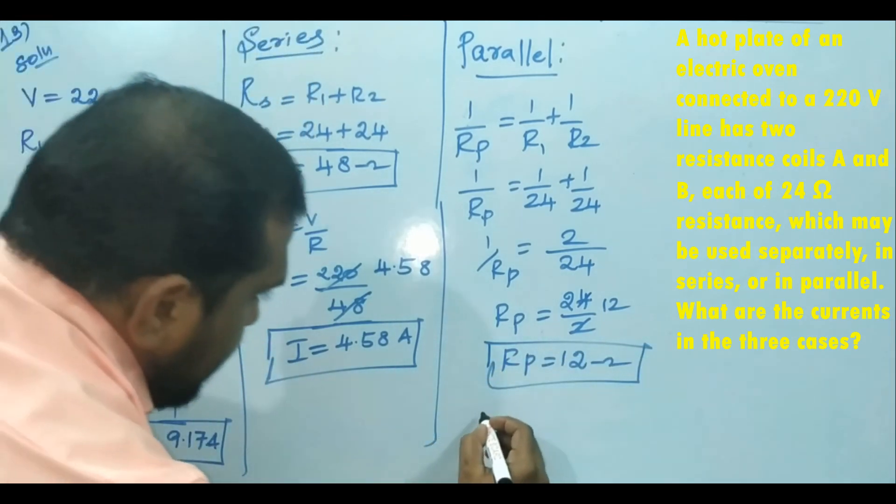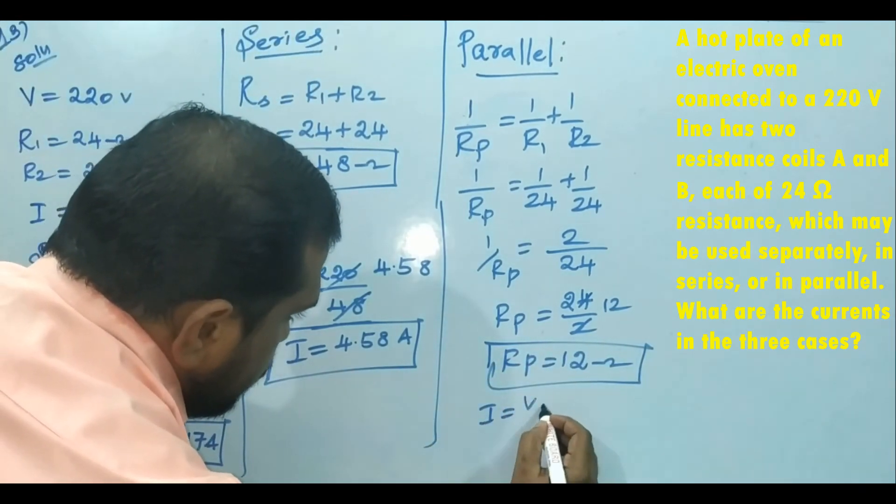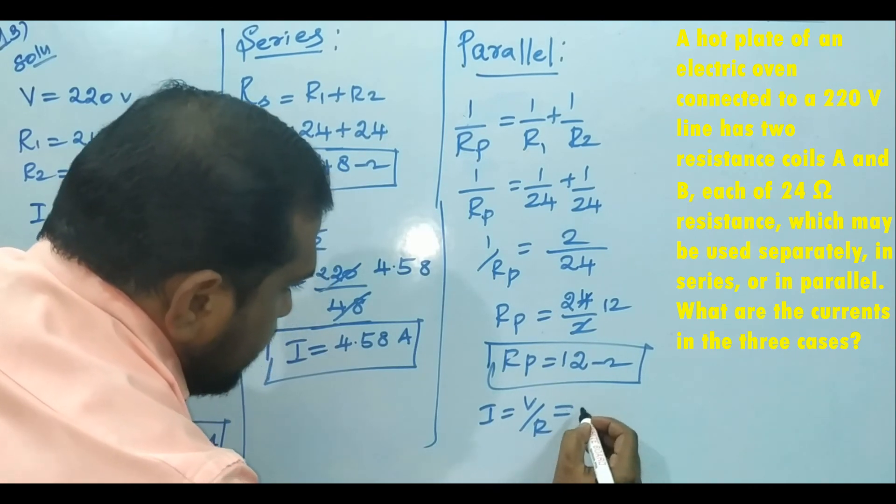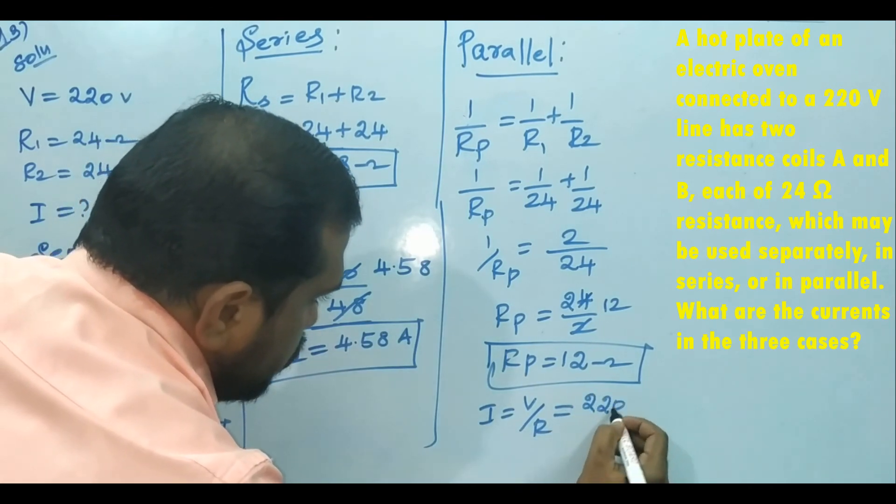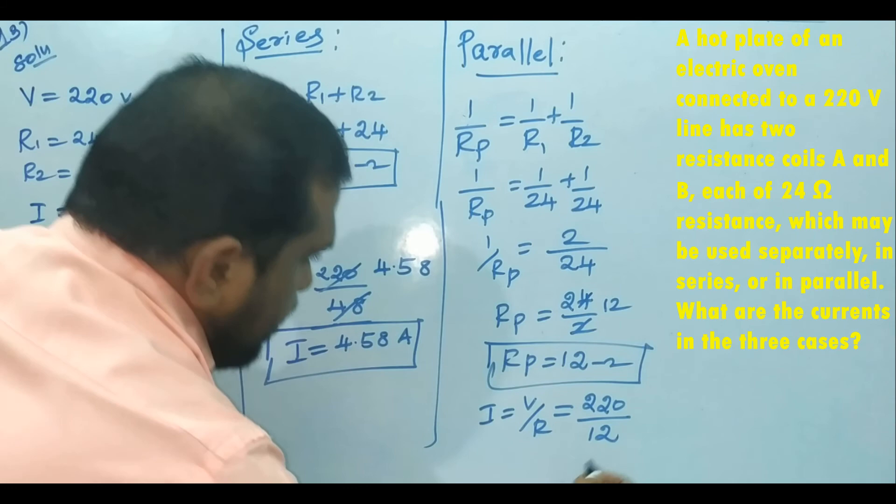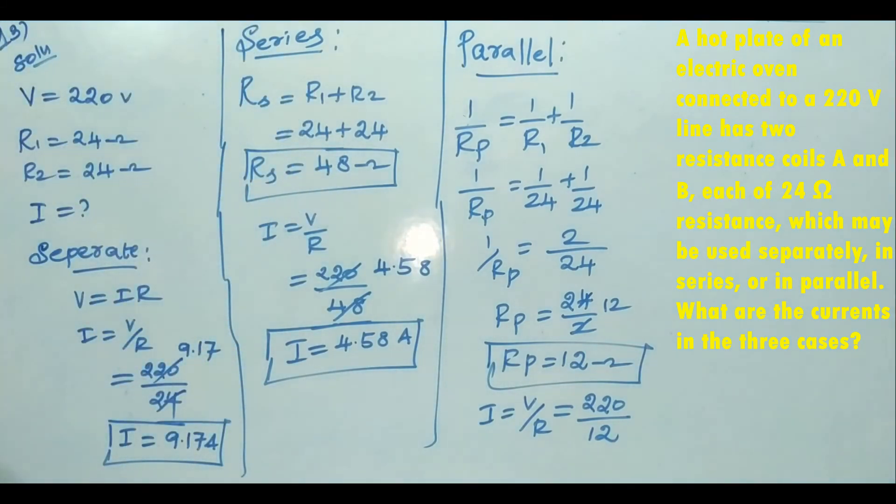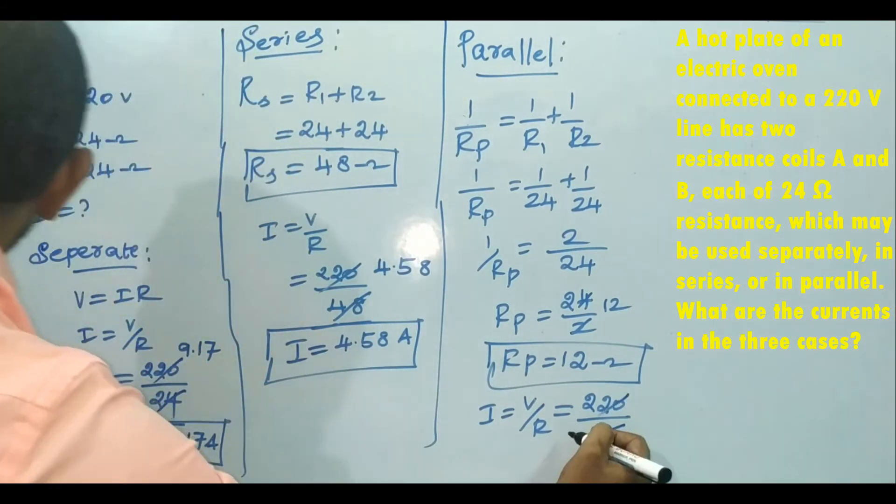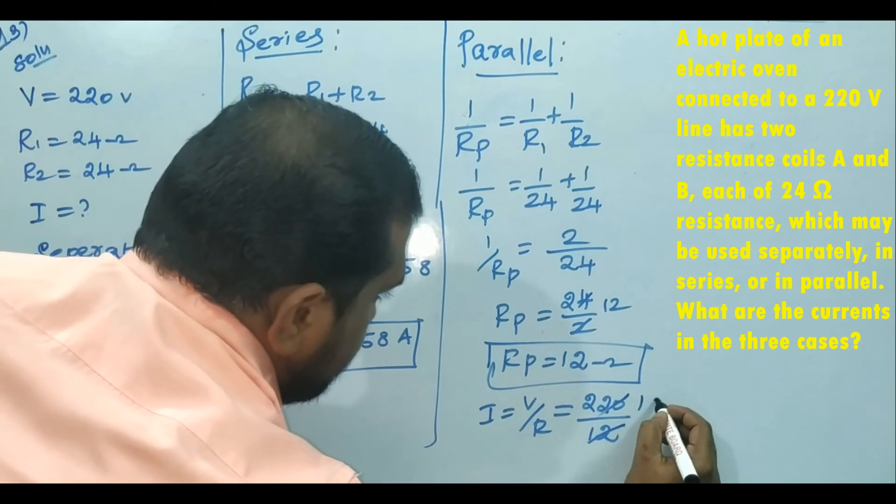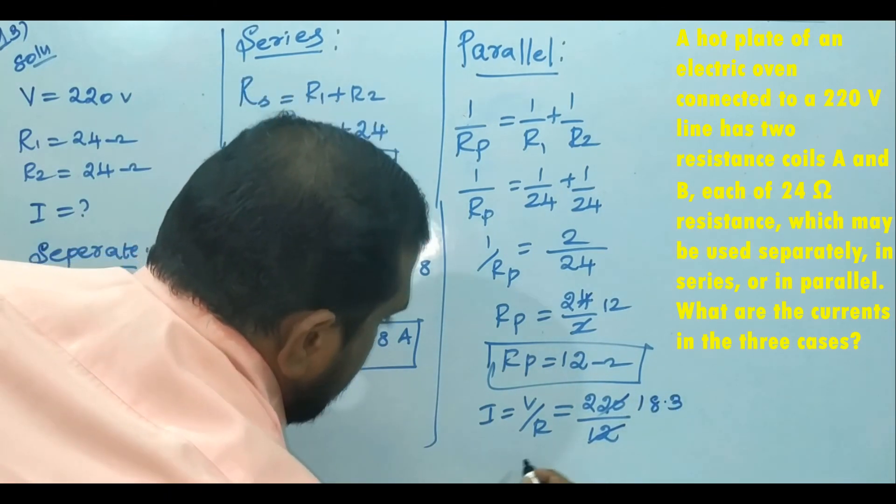Then current, I equals V by R. V is 220, resistance is 12. 220 by 12 equals 18.3. So the I value is 18.3 ampere.